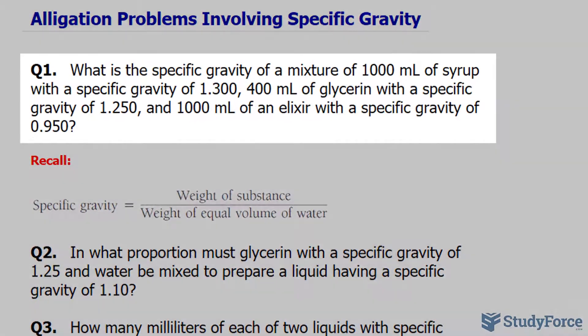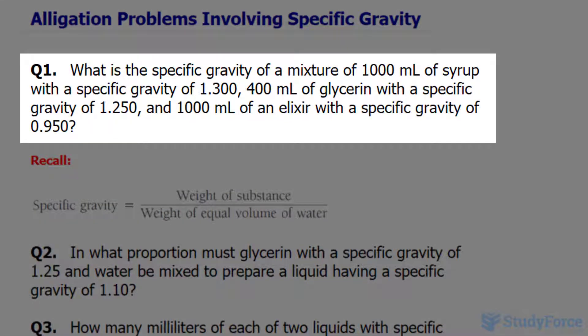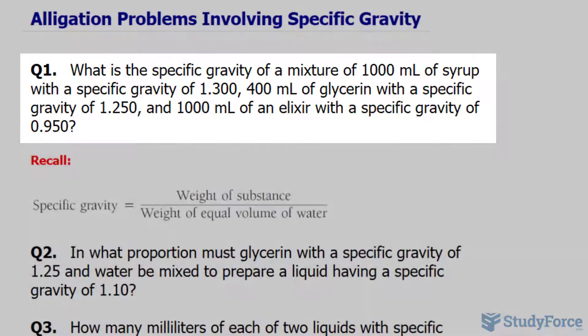Question one reads: what is the specific gravity of a mixture where the mixture contains 1000 milliliters of syrup with a specific gravity of 1.300, 400 milliliters of glycerin with a specific gravity of 1.250, and 1000 milliliters of an elixir with a specific gravity of 0.950?